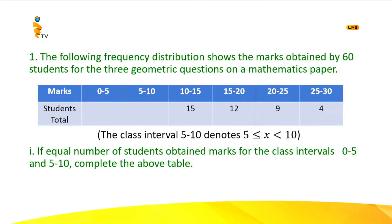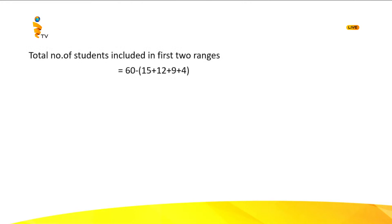Since equal numbers of students obtained marks for the class intervals 0 to 5 and 5 to 10, you can add the number of students who obtained marks from 10 to 15, 15 to 20, 20 to 25, and 25 to 30, then subtract that value from 60. That means you subtract 15 plus 12 plus 9 plus 4, which equals 40, from 60 — giving you 20.